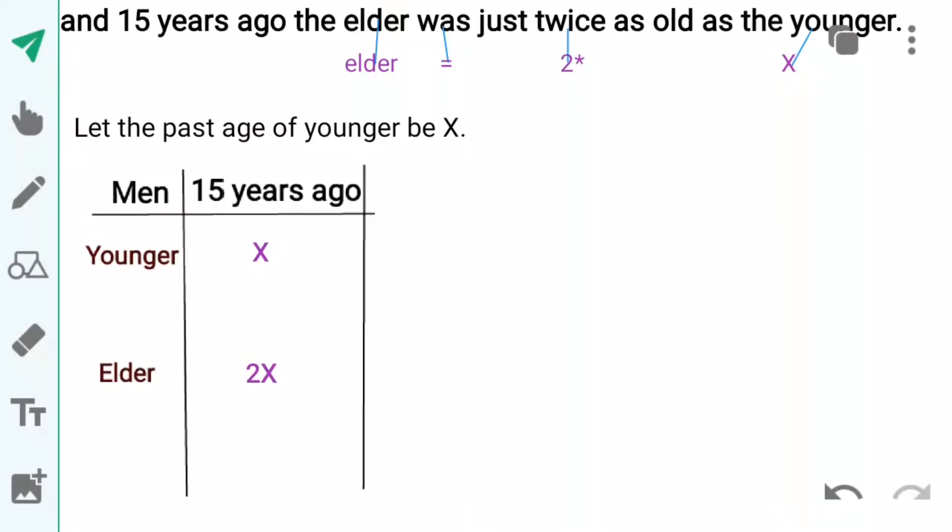Is method mein hum x second statement se leinge. And 15 years ago the elder was just twice as old as the younger. Students, yahaan younger ko x lengge. Aur isse aise likhengge: Let the age of younger be x.